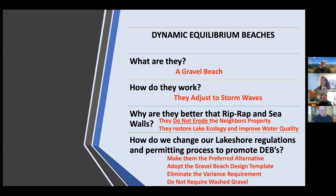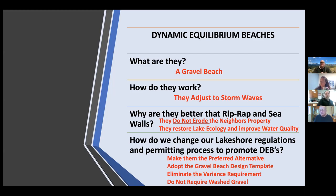How do we change our lakeshore regulations? I think we need to adopt them as the preferred alternative. We need to say, can we build a beach and help restore the lake rather than put in a seawall and riprap? Why is it mandatory to have a seawall? I've developed this gravel beach design template and it's an engineering approach to coming up with the metrics you need to build a beach. We need to eliminate the variance requirement so that we can just follow a steadfast process.